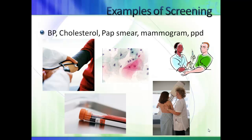If abnormalities are detected by the mammography screening test, diagnostic radiologic tests such as an ultrasound or an MRI, or biopsies, can be performed. A PPD or TB skin test is a screening test used to screen a large group of individuals to identify which ones may need further diagnostic testing, such as a chest x-ray, to rule out tuberculosis.